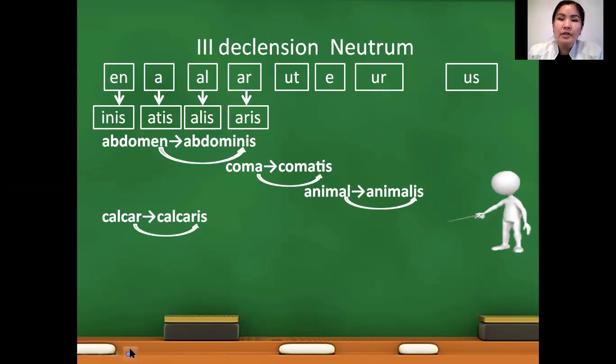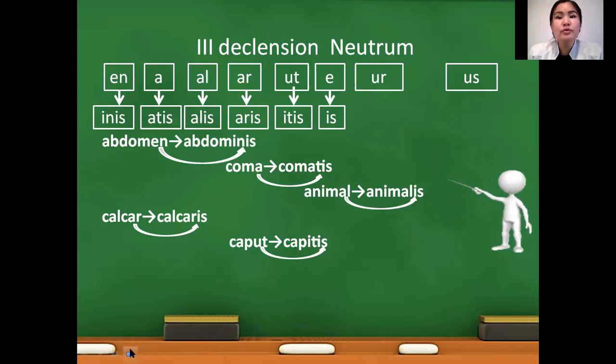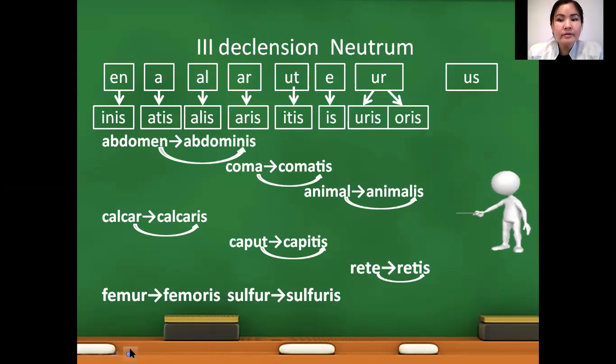Ending UT we change to itis: caput to capitis. Ending E we change to is: rete to retis. For UR ending we have two genitivus endings, oris and uris. For words containing even number of letters we use ending oris. Odd number of letters, we use ending uris, like femur to femoris, sulfur to sulfuris.